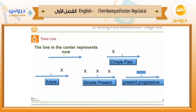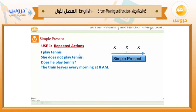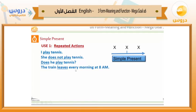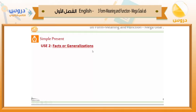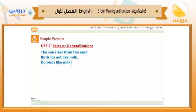We use simple present for: one, repeated actions. Example: 'I play tennis,' 'She doesn't play tennis,' 'Does he play tennis?' and 'The train leaves every morning at 8 PM.' These are about repeated actions. Also we use it for facts or generalizations like 'The sun rises from the East,' 'Birds don't like milk,' 'Do birds like milk?'